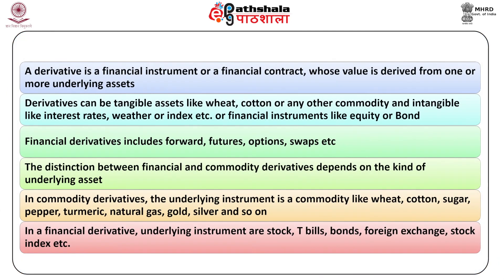A derivative is a financial instrument or financial contract whose value is derived from one or more underlying assets called the underlying. Derivatives can be based on tangible assets like wheat, cotton or any other commodity, or intangible assets like interest rates, weather or index, or financial instruments like equity or bonds. Financial derivatives include forwards, futures, options, swaps, etc. The distinction between financial and commodity derivatives depends on the kind of underlying asset.